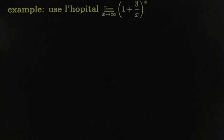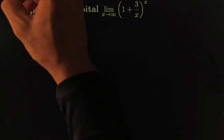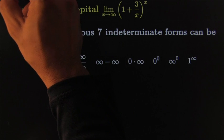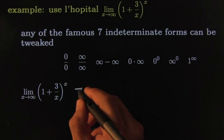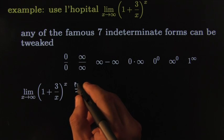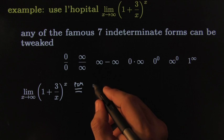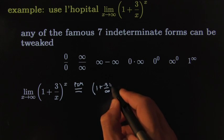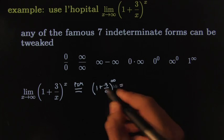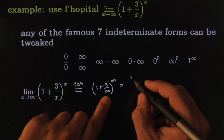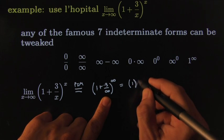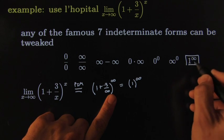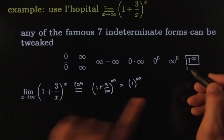Alright, how about this one? This is getting better and better by the minute. So if you try the plug-in method on this one, of course you get 1 plus 3 over infinity raised to infinity. And of course 3 over infinity would be pretty close to zero — it lands in the zero bucket and you get 1 to infinity. You can quickly identify that as one of the famous indeterminate forms.